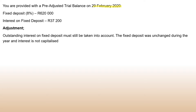The fixed deposit carries an interest rate of eight percent. If it is in the adjustment, the statement will tell you how much of the interest rate applies. The fixed deposit amount is 620,000, and the interest on fixed deposit already recorded in the trial balance is 37,000.